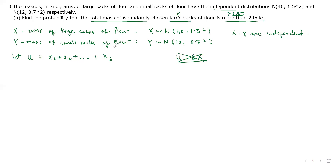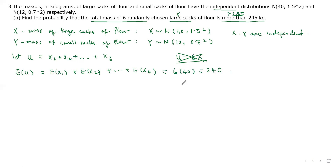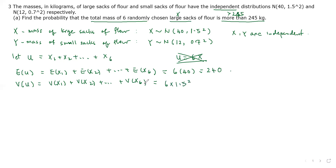When talking about total mass, you are supposed to add. The expected value of U is E(X₁) + E(X₂) + ... + E(X₆). There are six of these, so that is 6 times 40, giving a mean of 240. The variance of U is Var(X₁) + Var(X₂) + ... + Var(X₆), which is 6 times 1.5 squared, giving a variance of 13.5.